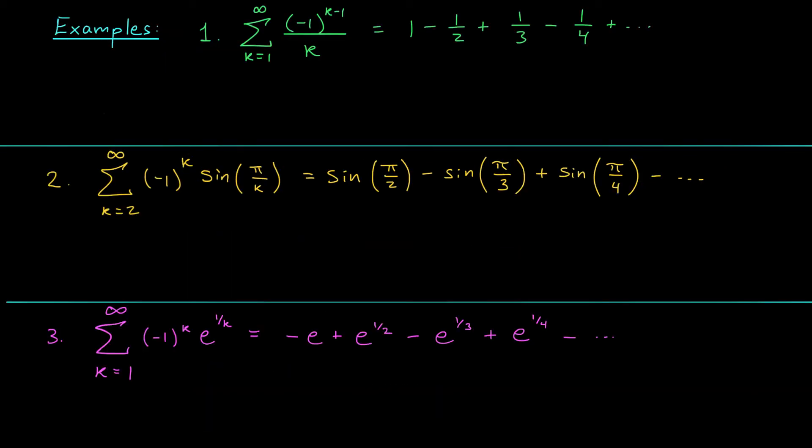Okay, here I have three examples where I'm going to attempt to apply my alternating series test. You can see that in each case we have a term that looks like minus one with an exponent that depends on k. Not all alternating series will be written in this way, but when you see something like this, this is a telltale sign that the alternating series test might be helpful.